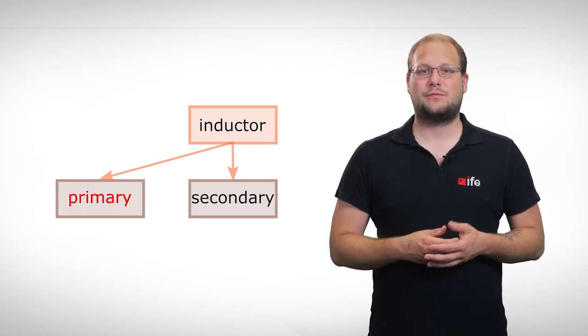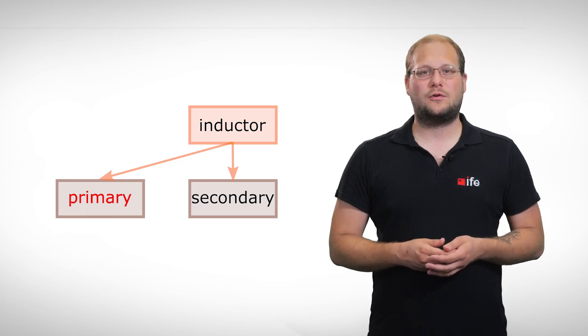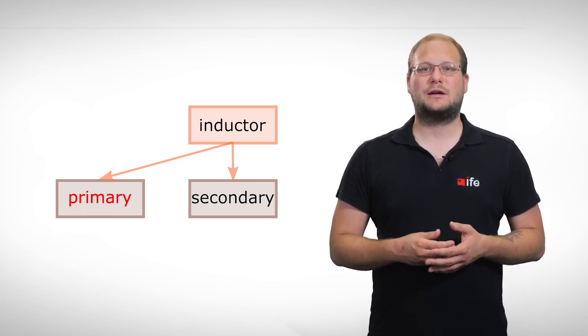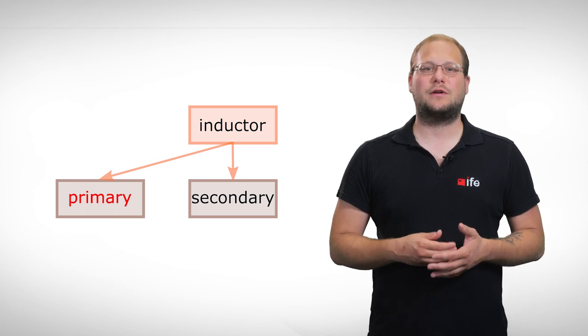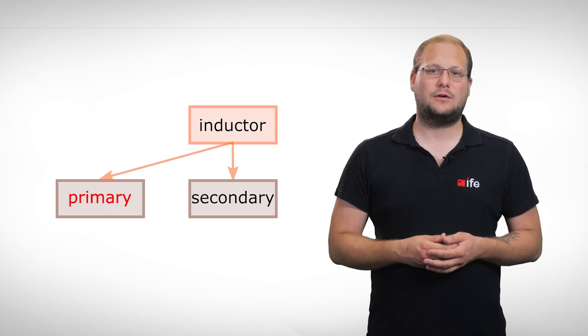If we have the switch on the primary side, we have the advantage that we can use a transformer with higher frequencies, which makes it much smaller in size and more efficient. A disadvantage is the higher complexity of the circuit.